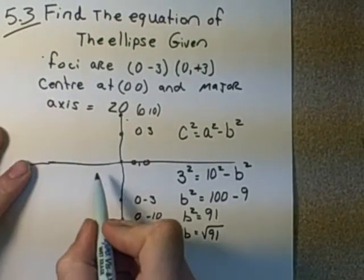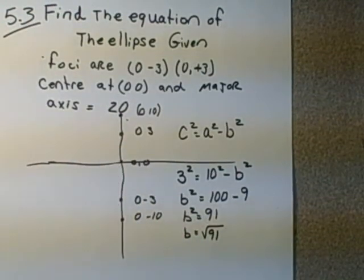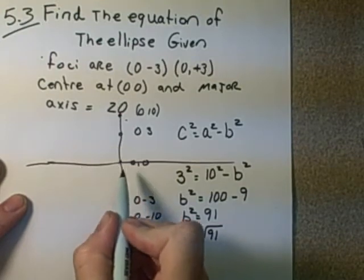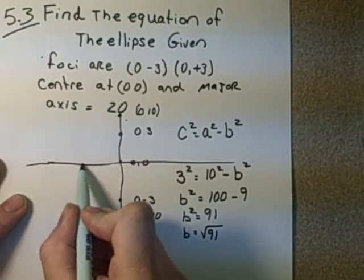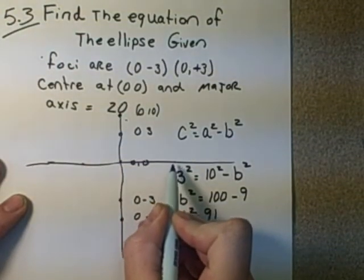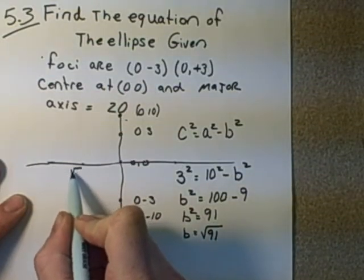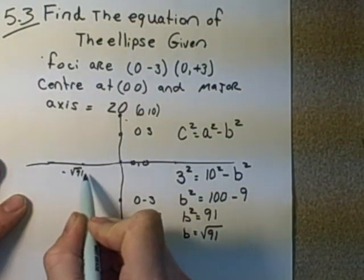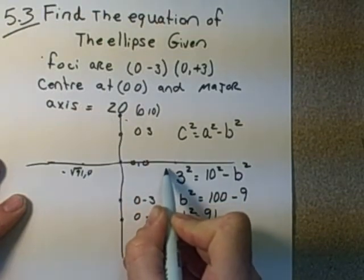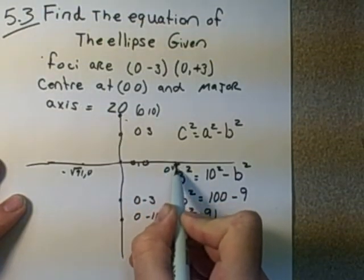So out here, root 91, which if we work that out, it's almost 10, but not quite - it's almost a circle, but not quite. So out here is where B is, and the two Bs, there's going to be root 91 negative and 0, and out here is going to be 0 and root 91.